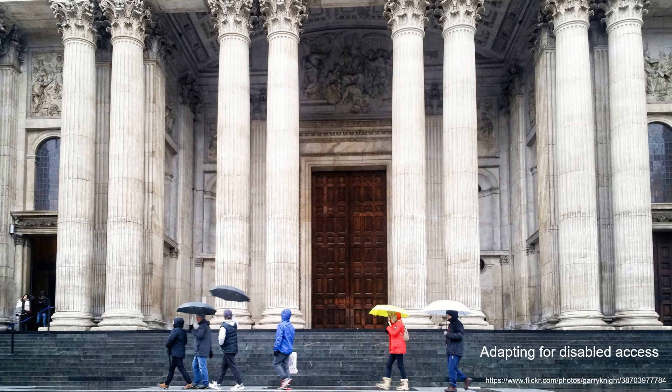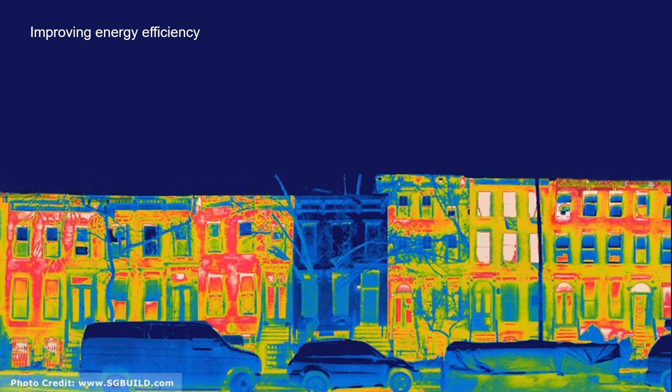For universal access, we have to think about how we access into the building and also how we allow movement within it. A number of our significant buildings were built with very poor disabled access. The challenge is how we retain the character of a building while still allowing everyone the opportunity to enjoy it.